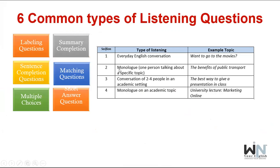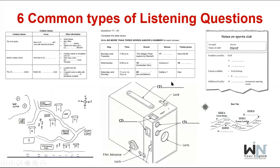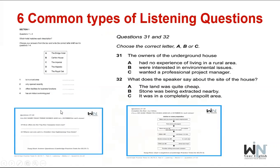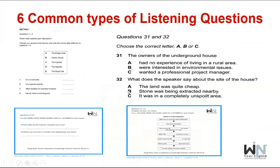Now I'll give you a small gist of how classes are conducted. In a listening class, the instructor tells you how many types of questions there are — labeling, summary completion, sentence completion, multiple choice, short answer, matching — and what type of conversation will be there: monologue, multiple conversation, and what subjects will appear. Band score is calculated after every session. If you have doubt in a specific type like maps, you can ask the instructor and they'll explain the tips.